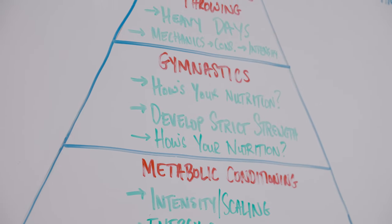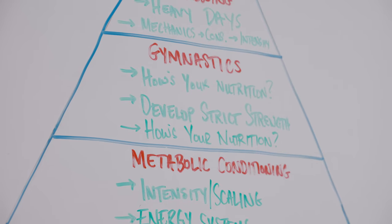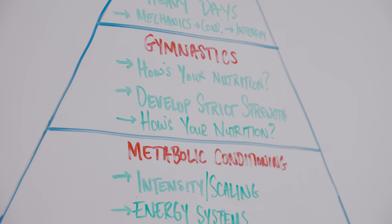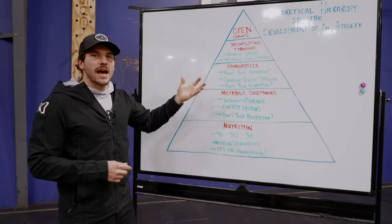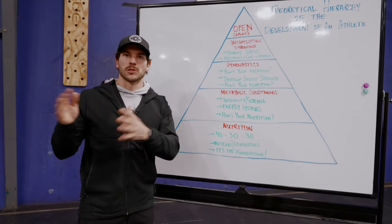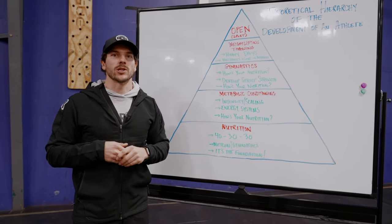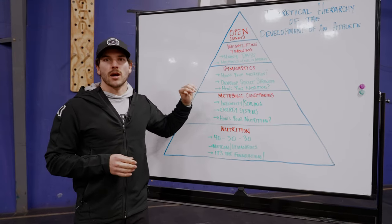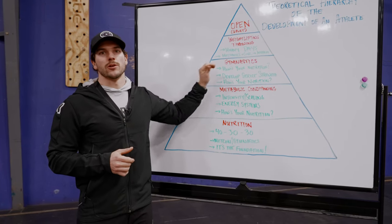After that, we go up to our gymnastics, the next level of the pyramid here, the next thing that we talk about with the athlete. Gymnastics, ultimately, bodyweight movements are a strength-to-bodyweight ratio equation. Again, this is a conversation where we have to start with, how's your nutrition?